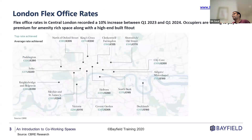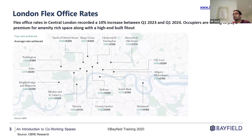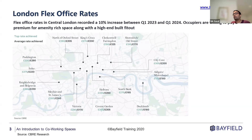Just to give a sense of the rates you typically pay in co-working, focusing on London: rents in central London have gone up by 10%, and average rates in central London can vary anywhere between the high £200s to the mid £300s per desk per month, depending on location, proximity to the tube station, the overall quality of the building, and the spectrum of amenities offered.